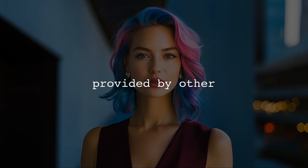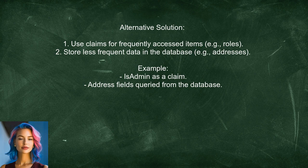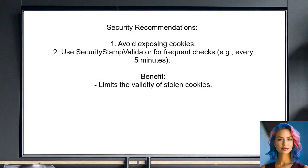Let's look at the answers provided by other users. One user suggests a practical rule of thumb: place frequently accessed items, like user roles, as claims in the cookie. For less frequently needed data, such as addresses, it's better to store them in the database and query them on demand. To enhance security, they advise against exposing cookies and suggest implementing the security stamp validator, which can be set to check for updates every five minutes — ensuring that even if a cookie is stolen, it will only be valid for a short time.